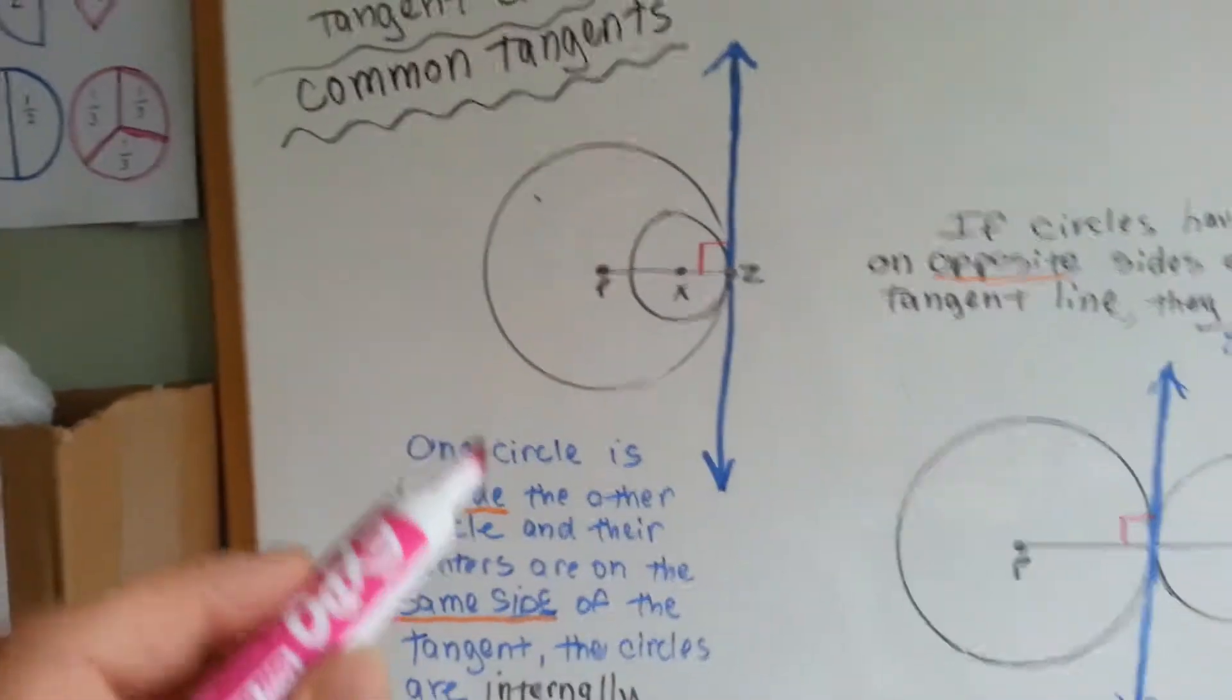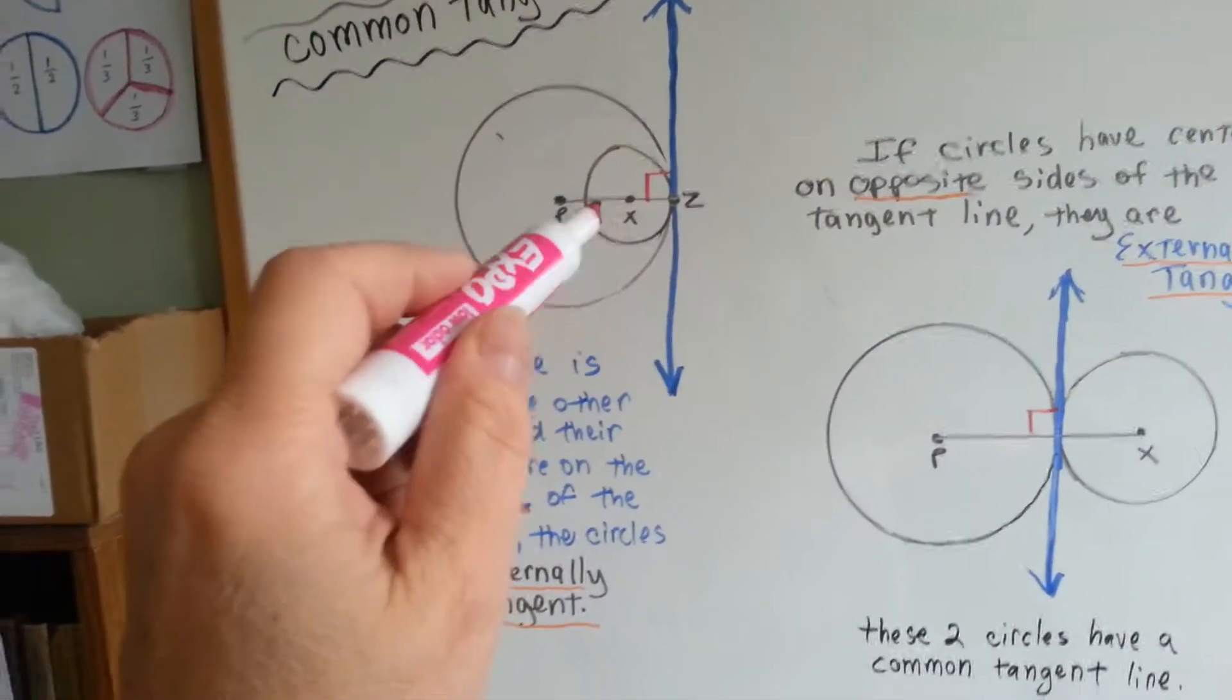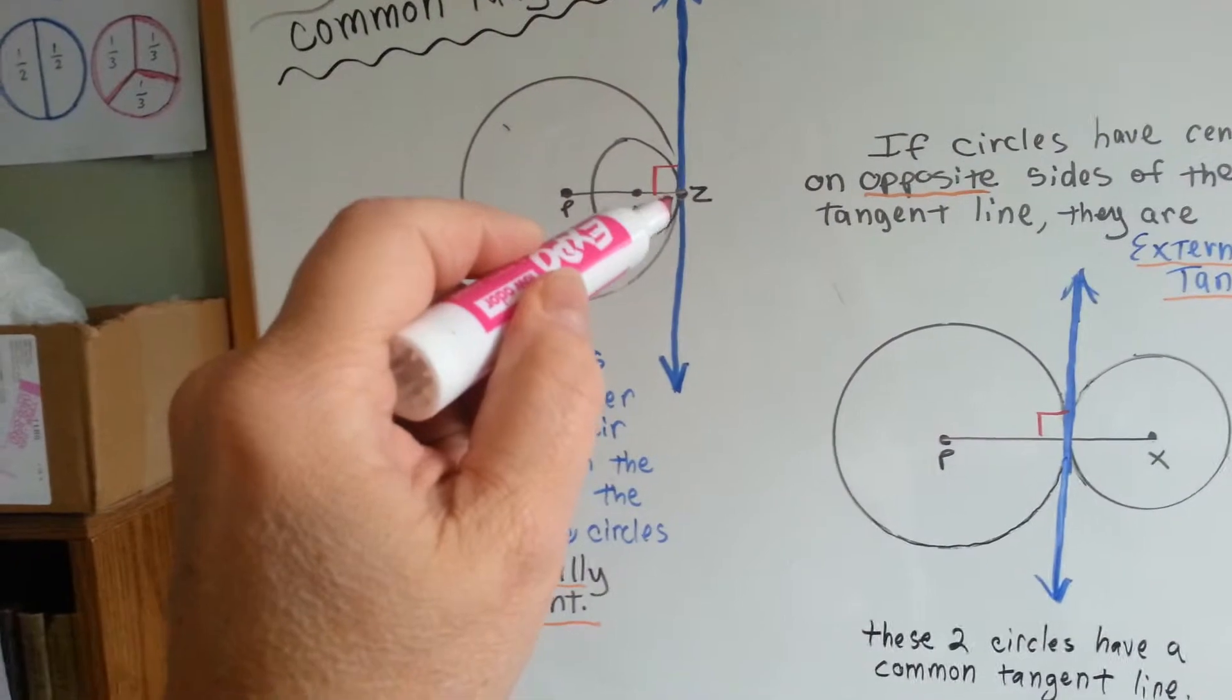But circles can also be tangent to each other when one circle is inside the other circle, as long as they touch at one point like this.